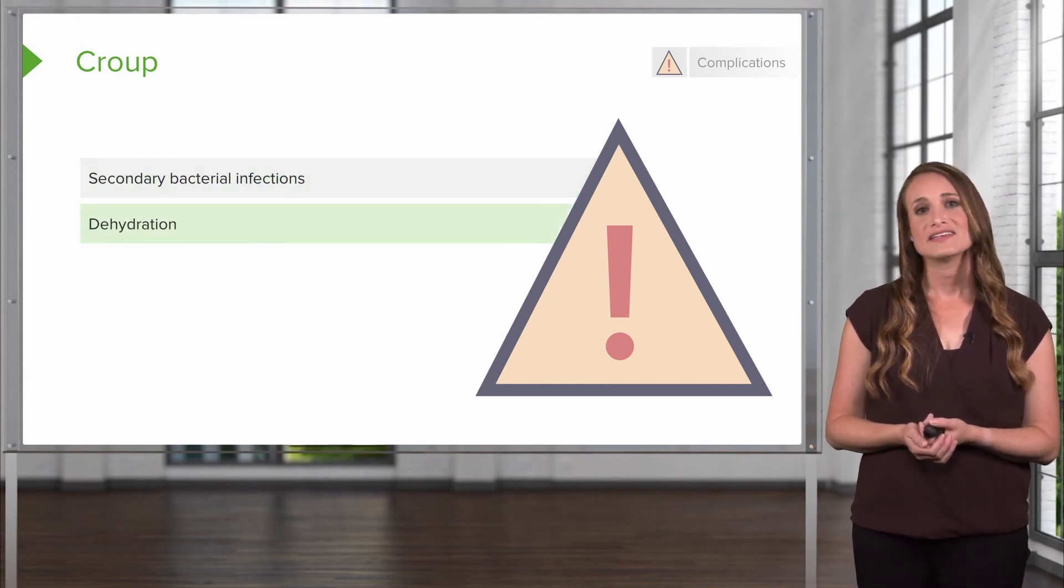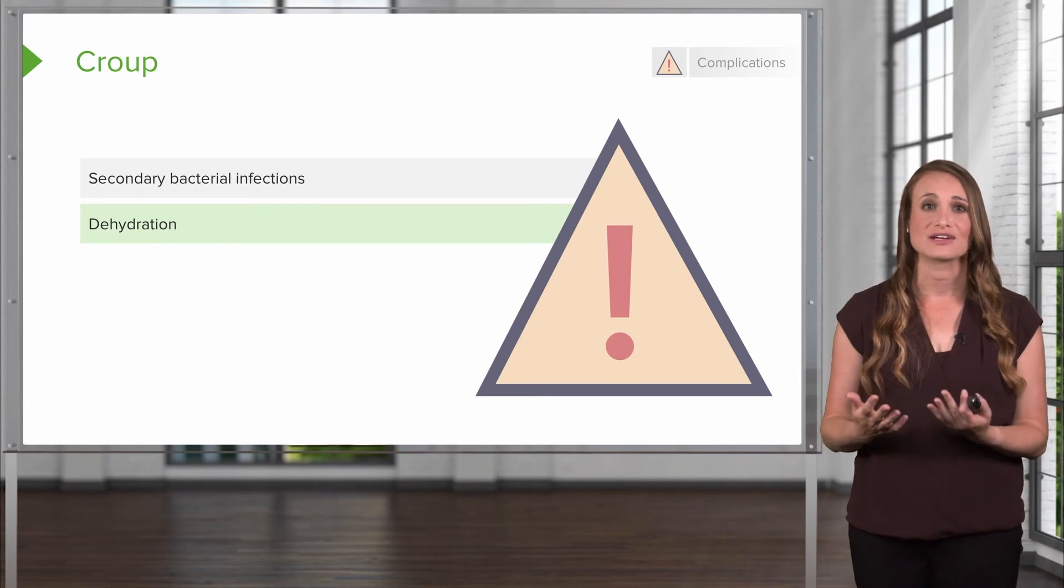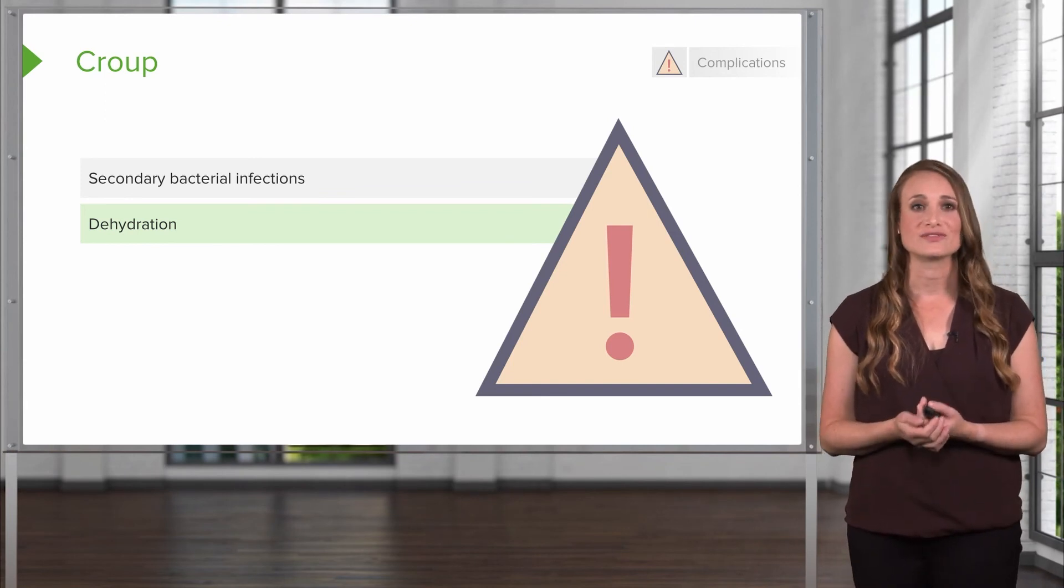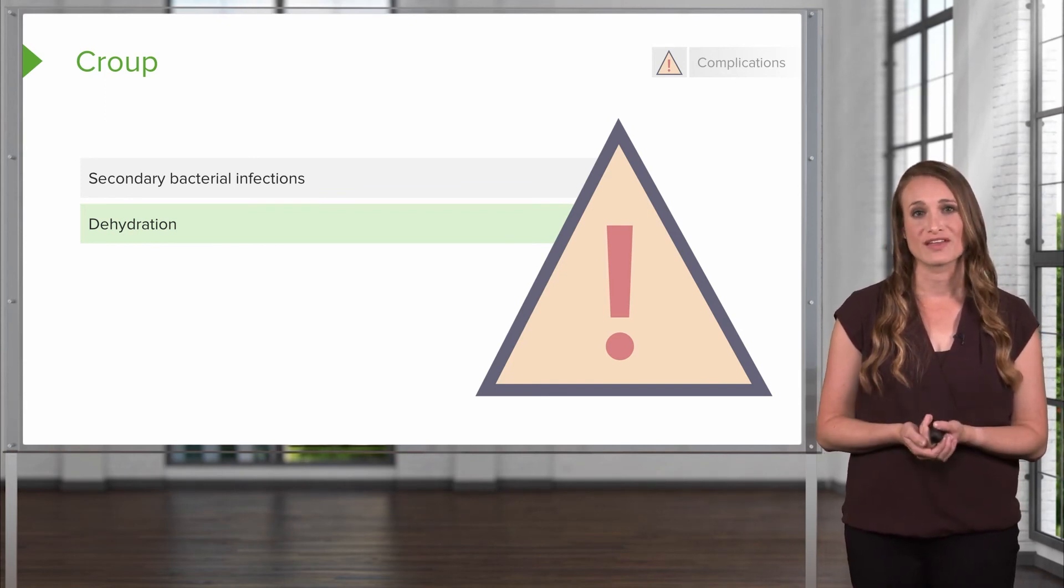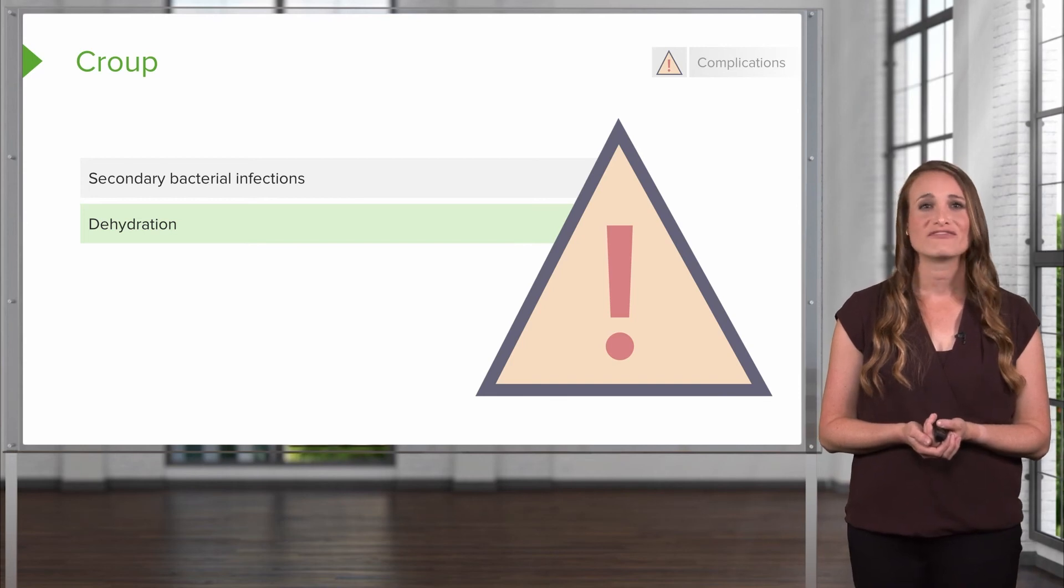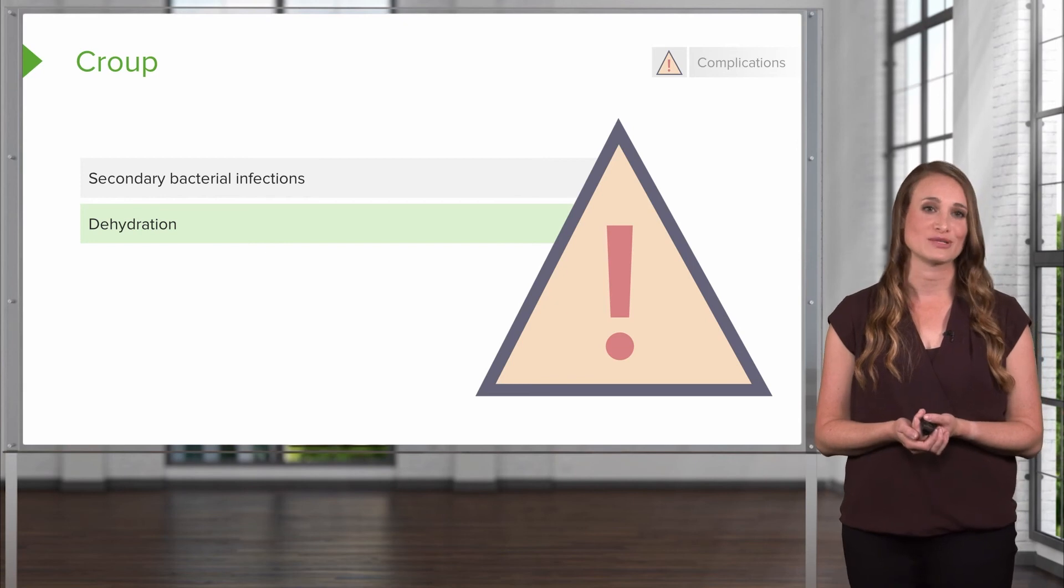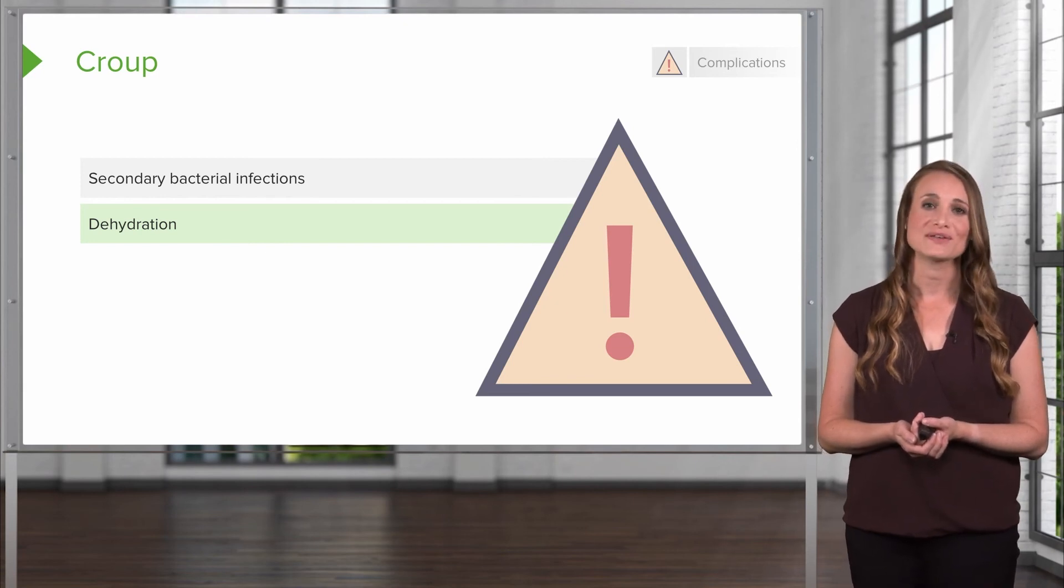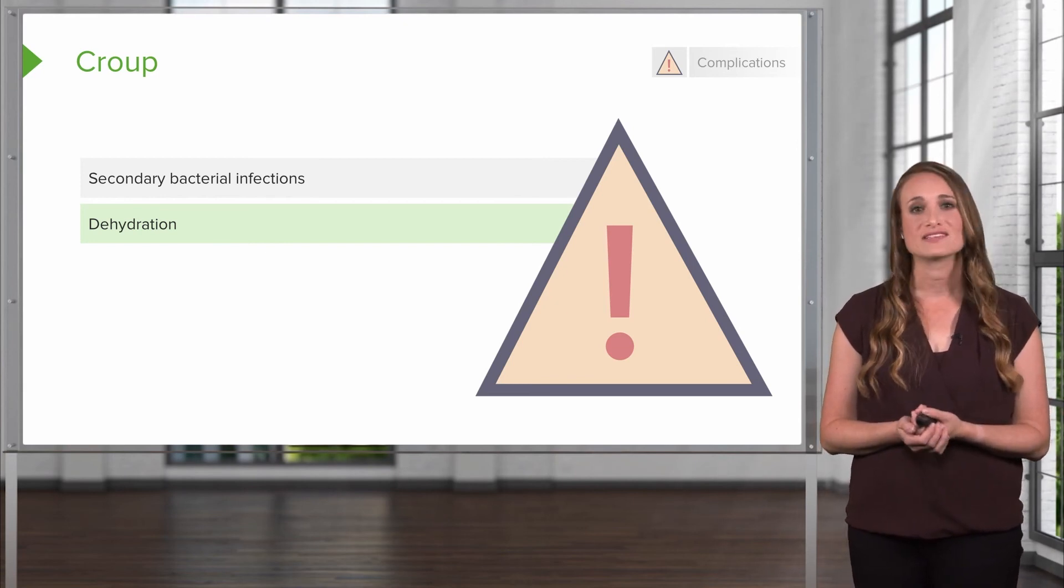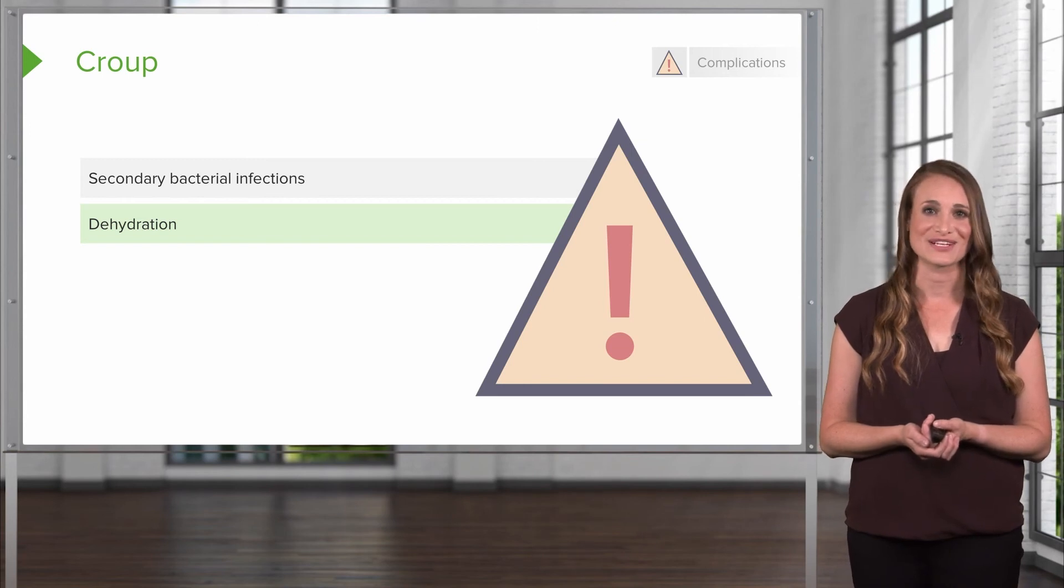Dehydration can develop, and this can be because the child's breathing faster. They're going to lose more fluids through their insensible water loss with their breathing. In addition, they may feel really lousy and they just might be napping most of the day, missing out on opportunities to drink, and they may also have a sore throat. And all of these factors can put the child at risk for dehydration.